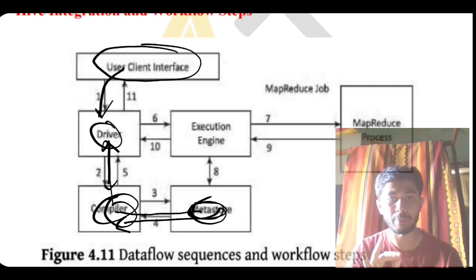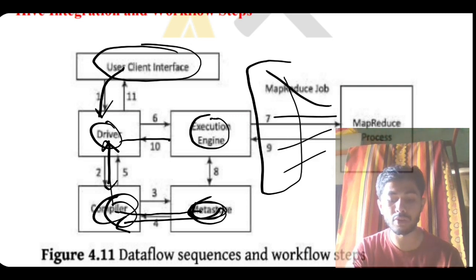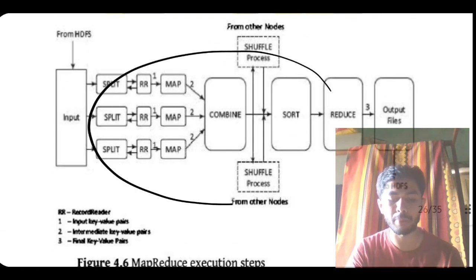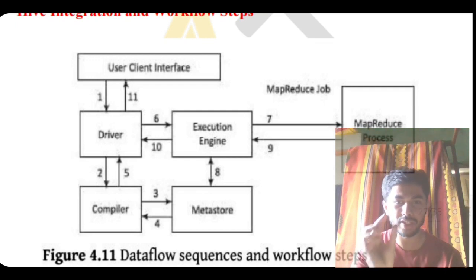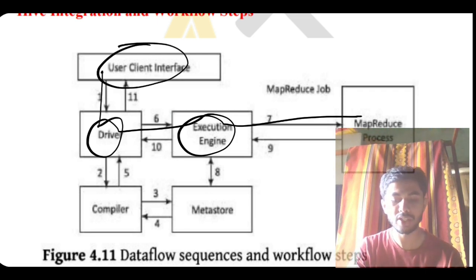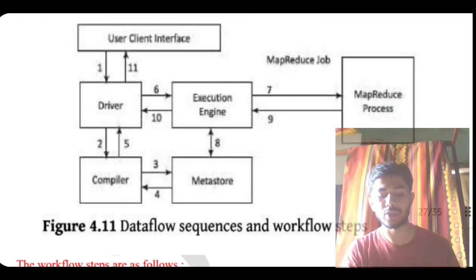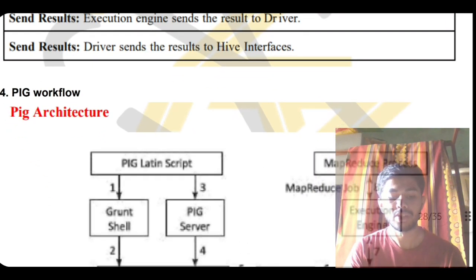After compilation, the next step is execution. The driver sends to the execution engine. Since the data is very large, MapReduce is used to reduce it — all the steps mentioned earlier happen here. After MapReduce, you have a small, smart result. The execution engine forwards it to the driver, which forwards it to the user client. The steps include fetching results, sending results, executing, and compiling — that covers the Hive workflow.